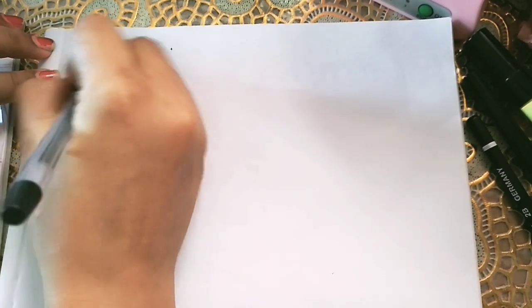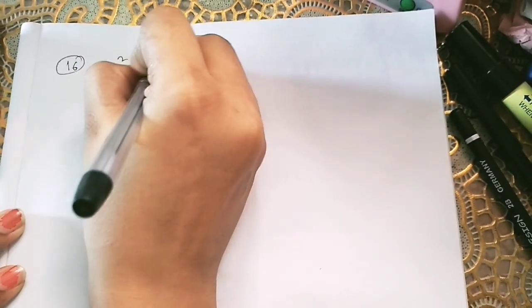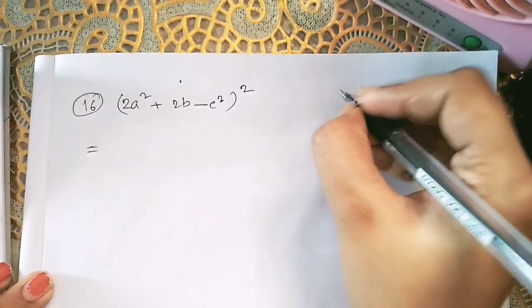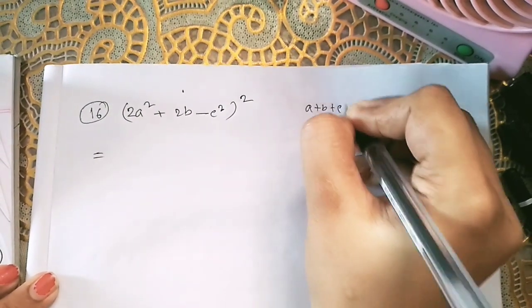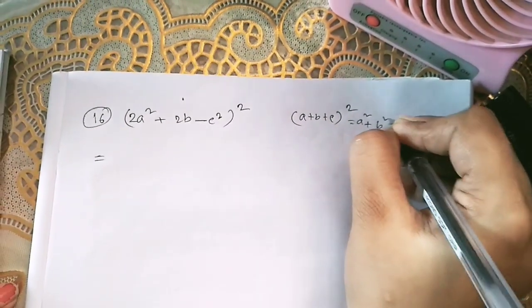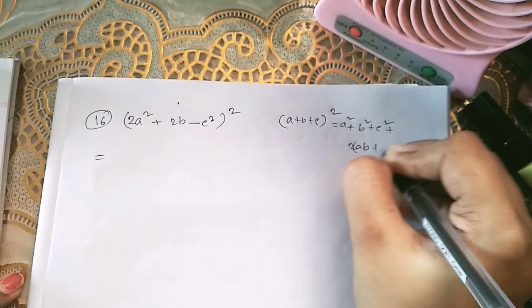So we have done with the first two formulae. Now we will see the application of the third formula, which is (a+b+c)². For that I will solve problem 16, which is (2a² + 2b - c²)². We have to find the square of the expression. To solve it we will apply the formula (a+b+c)² = a² + b² + c² + 2ab + 2bc + 2ca.